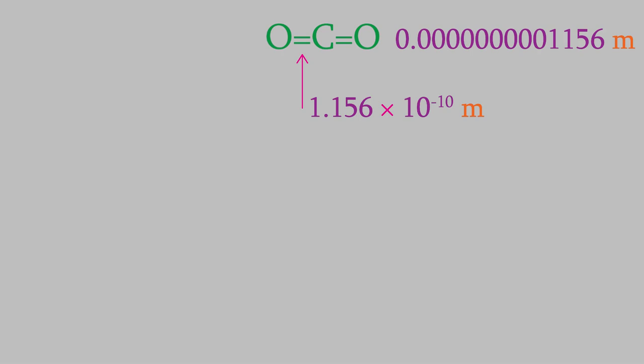We could also give that in nanometers, which would give us 0.1156 nanometers. So, the length of a chemical bond is even less than a nanometer. For that reason, we often use different units for a bond length.